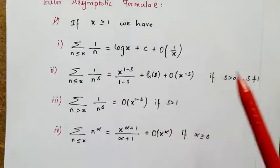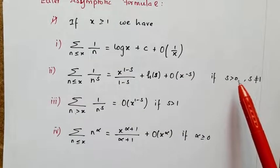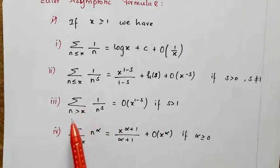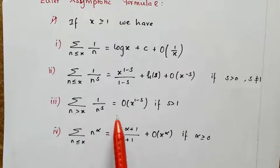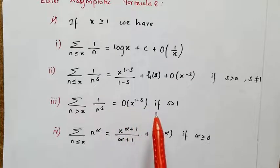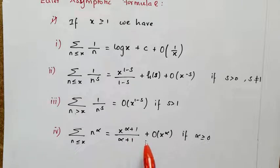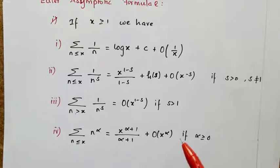The third formula is: sum over n > x of 1/n^s = O(x^(1−s)) if s > 1. The fourth formula is: sum over n ≤ x of n^α = x^(α+1)/(α+1) + O(x^α), for α ≥ 0.